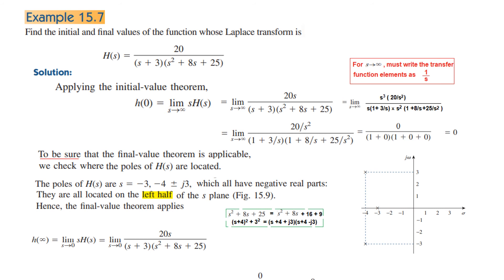Now we find the final value. H(∞) equals limit S tends to 0 of S·H(s). Multiplying by S and putting S equal to 0 directly, we again get an answer equal to 0. So both the initial value and the final value are 0.